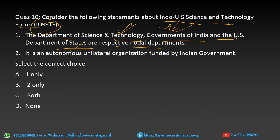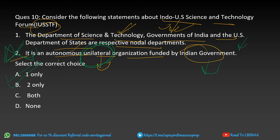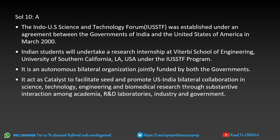Next statement about an organization: Statement two says it is an autonomous unilateral organization funded by the Indian government. The correct answer is option A — Statement two is incorrect because it is a bilateral organization; not only the Indian government but also the US government funds it. Statement one is totally correct — the nodal departments are DST (Department of Science and Technology) of the Government of India and the US Department of State. You can read the detailed explanation by pausing the video, and if you find any discrepancies, ping us via any of the mediums provided.